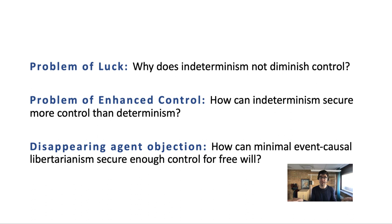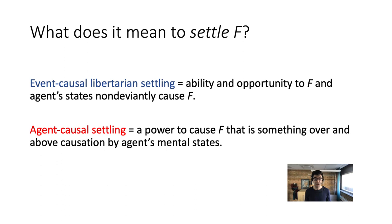The disappearing agent objection mainly focuses on a particular libertarian theory — namely Franklin's — and asks how that theory allows enough control for free will. The objection says there is not enough control because agents, according to event-causal libertarianism, cannot settle which decision they make. But Franklin thinks this objection doesn't have a lot of bite. His theory can allow that agents settle what decisions they make, because there is a perfectly legitimate way of understanding what it means to settle a decision.